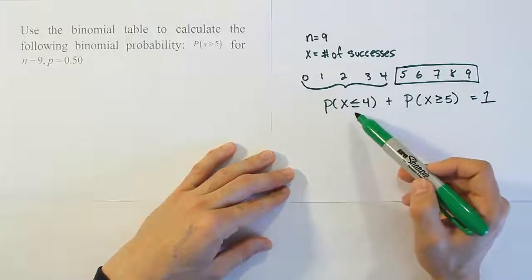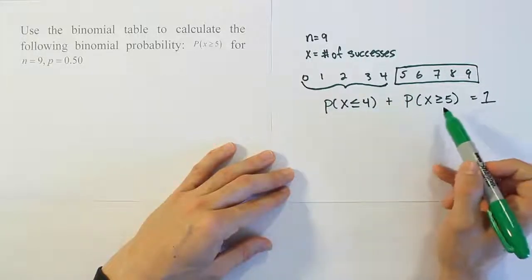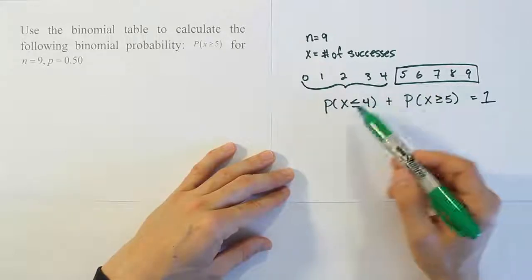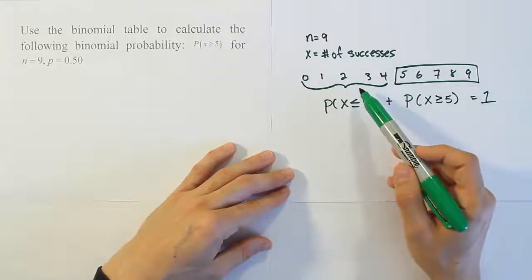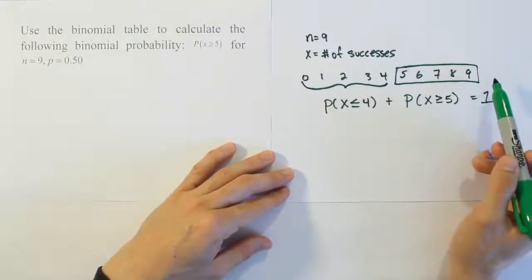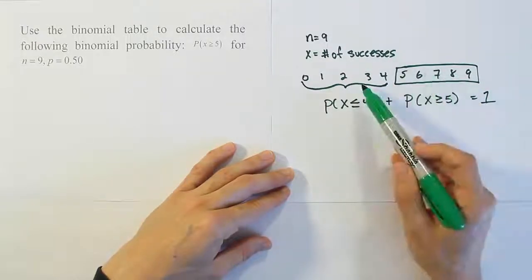Either the number of successes you have is 4 or less, or it's 5 or more. There's no other cases. There's no way you could be outside of either of these two sets. If you're not in this set, you have to be in that one.